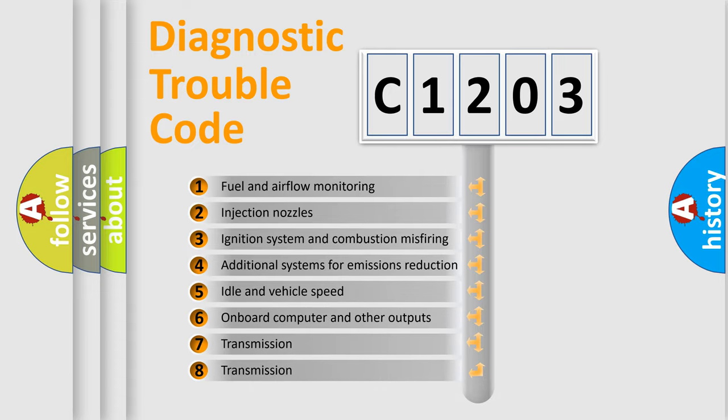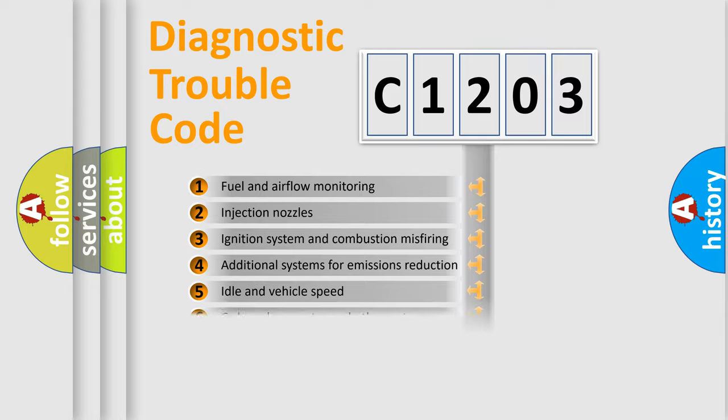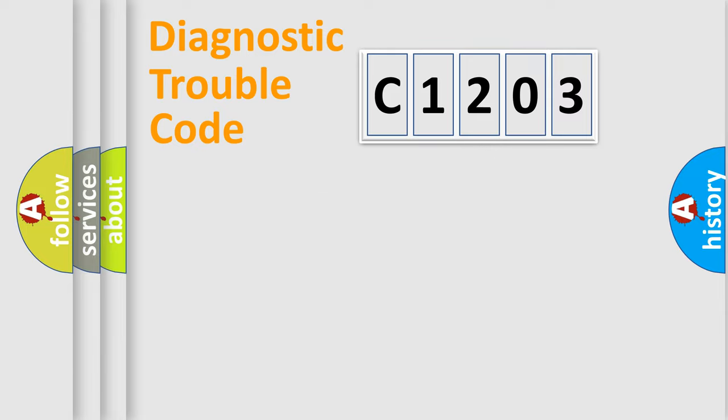The third character specifies a subset of errors. The distribution shown is valid only for the standardized DTC code. Only the last two characters define the specific fault of the group.